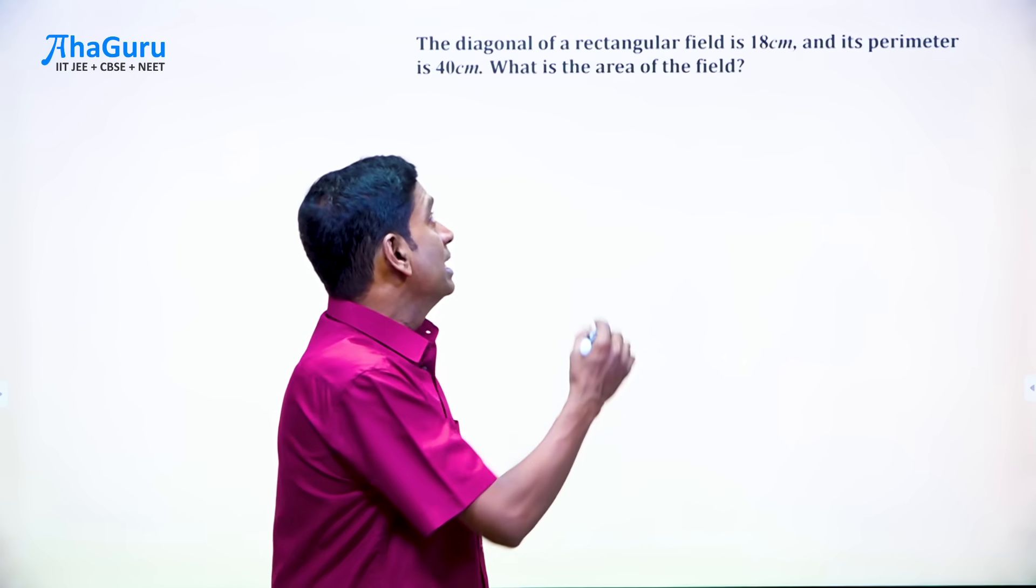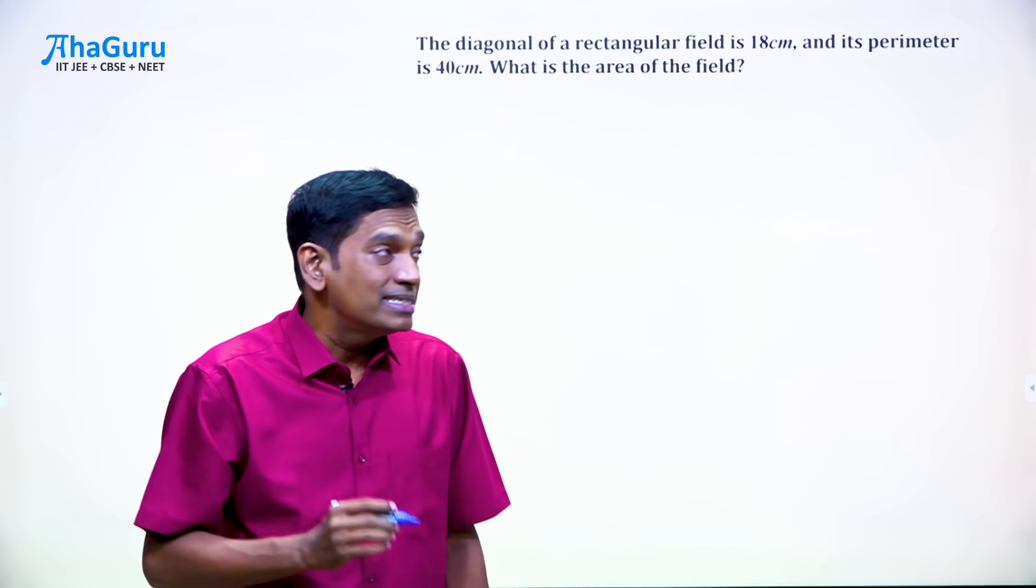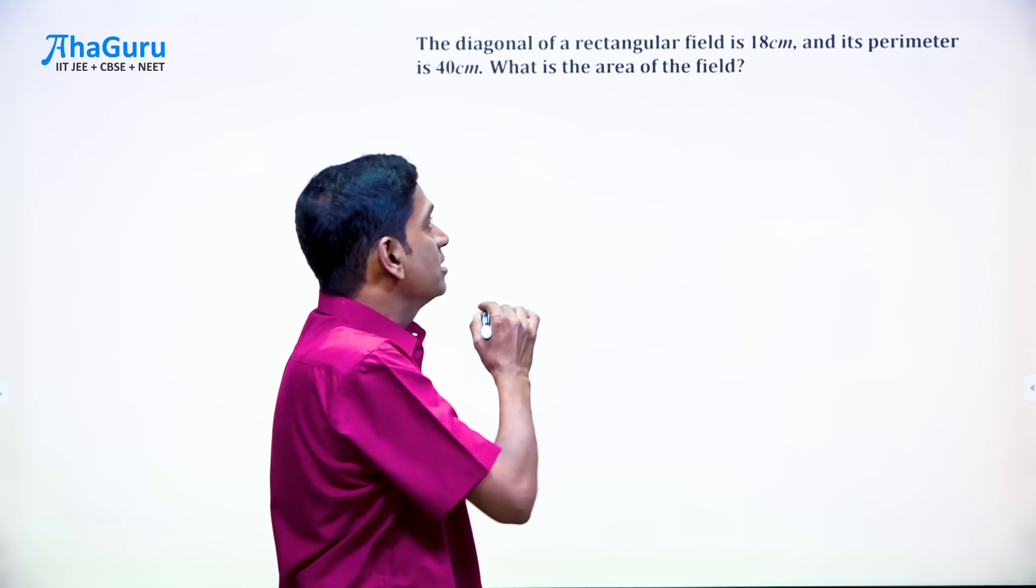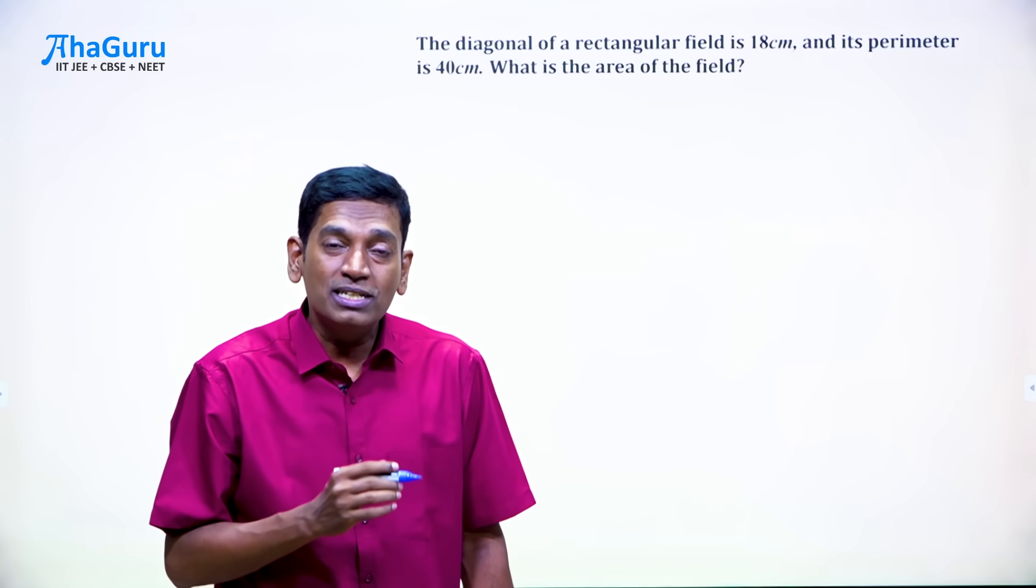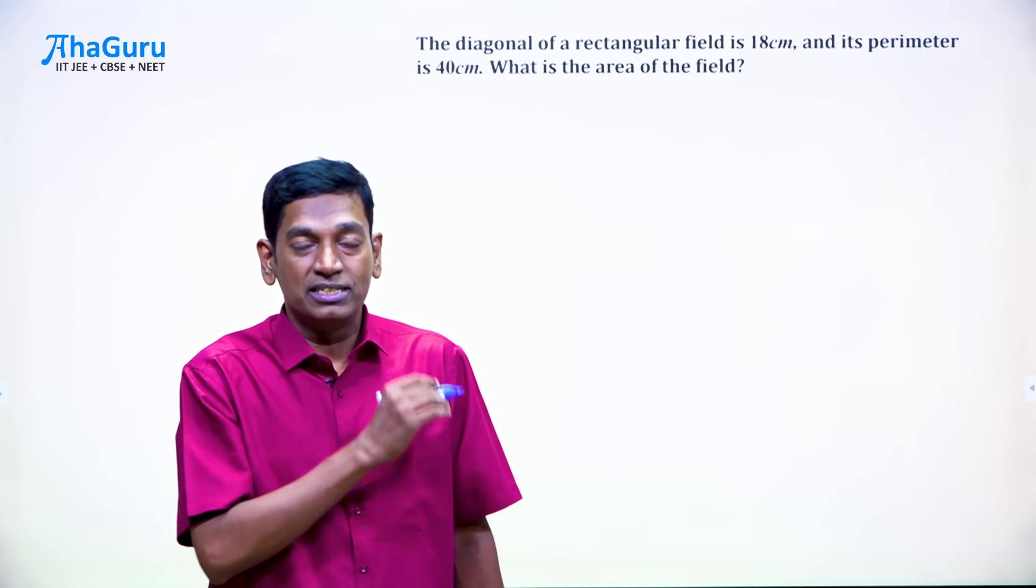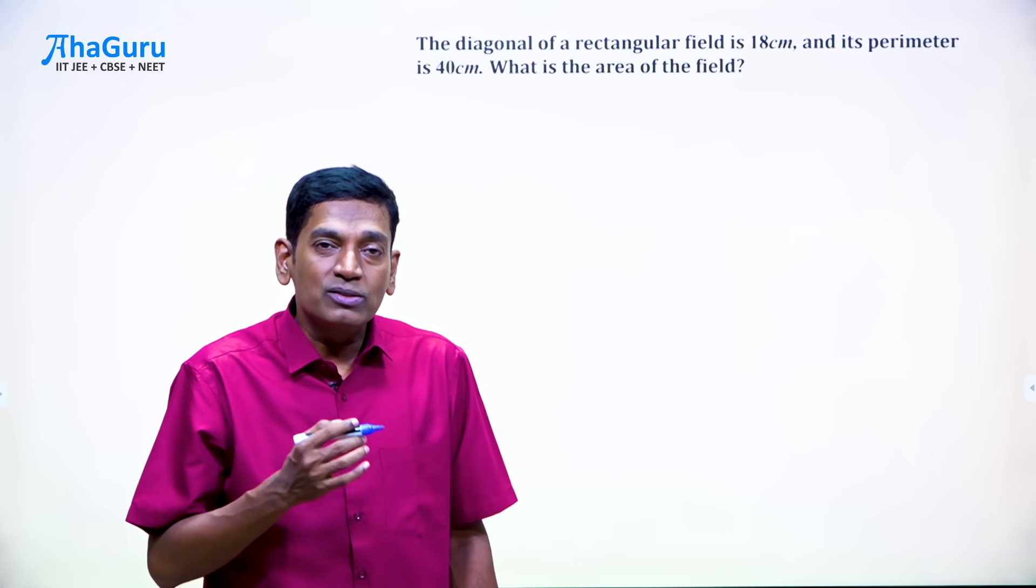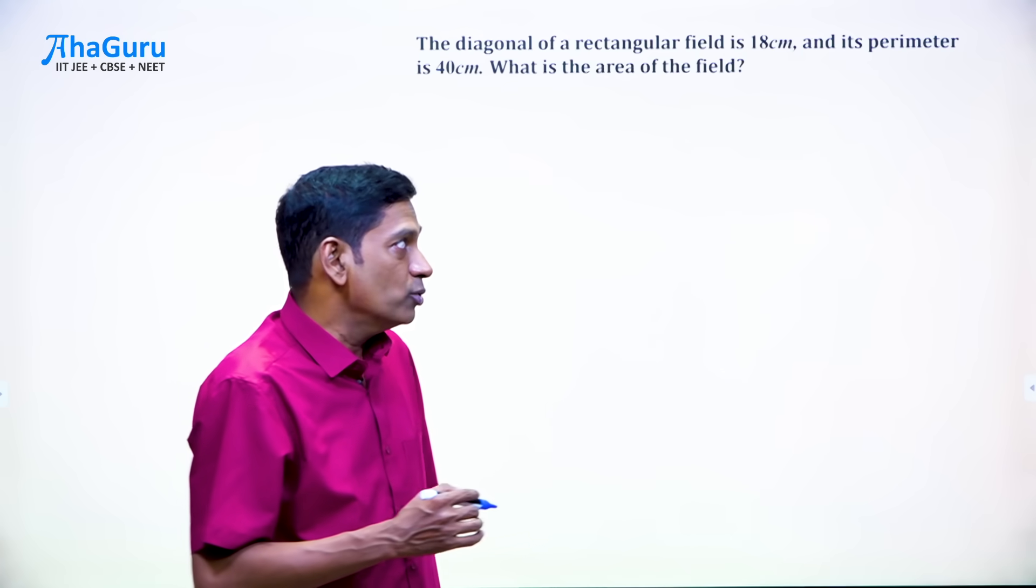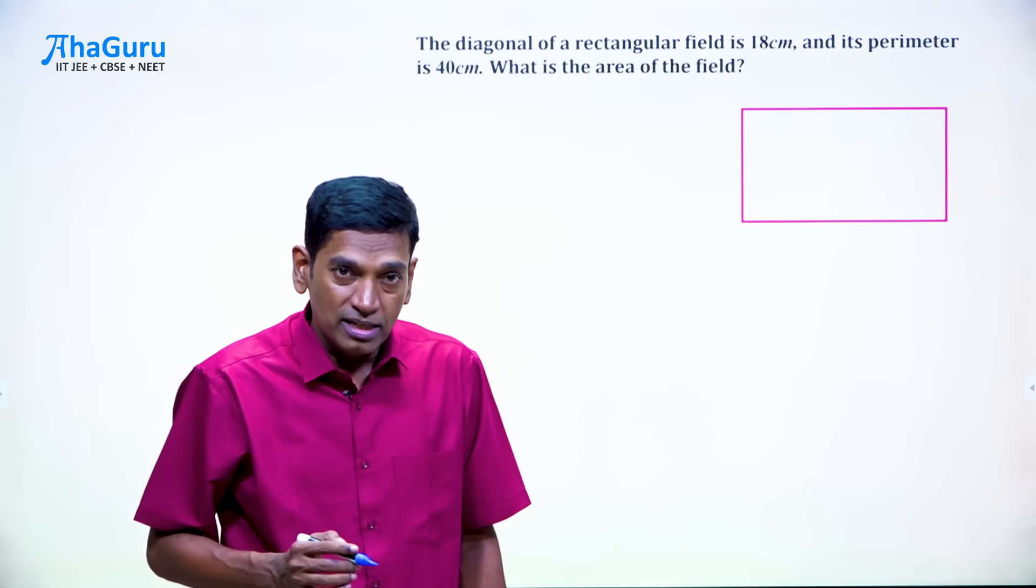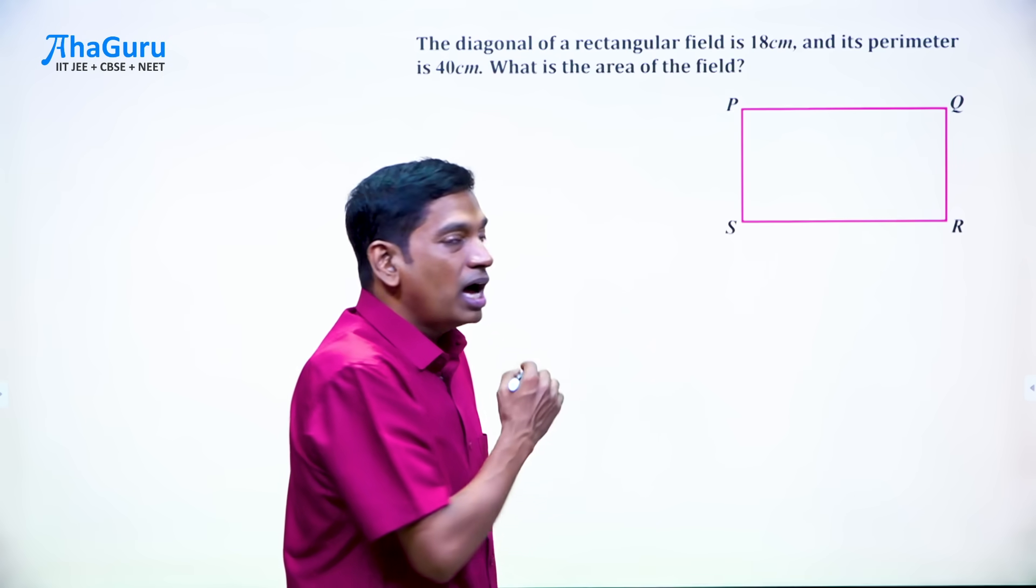Let's see, the diagonal of a rectangular field is 18 cm and its perimeter is 40 cm. What is the area of the field? So let's start with what information is given to us. We have a rectangular field, let's call it PQRS.